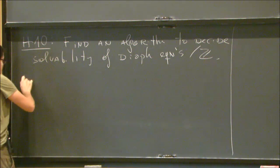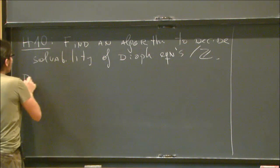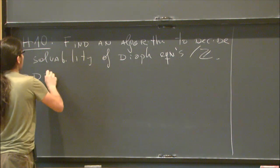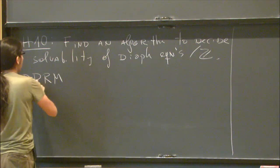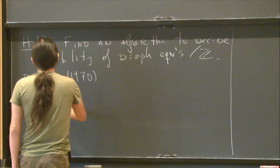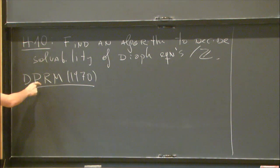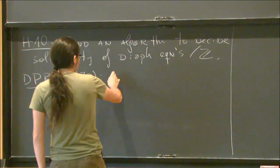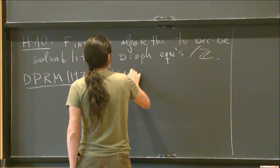The answer, which is pretty well known by these days, is the DPRM theorem from 1970. These letters mean Martin Davis, Hilary Putnam, Julia Robinson, and finally Yuri Matiyasevich, who gave the final piece of the argument in 1970, which is: Hilbert's 10th problem is unsolvable.